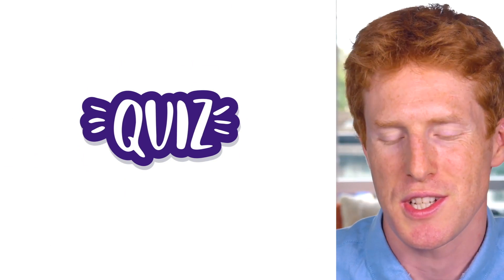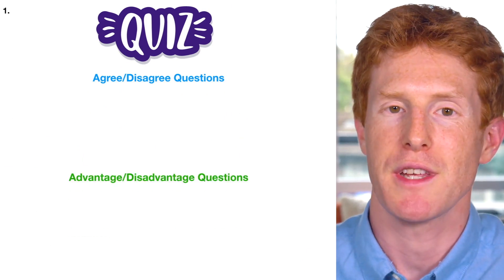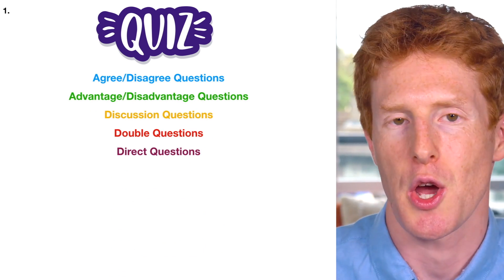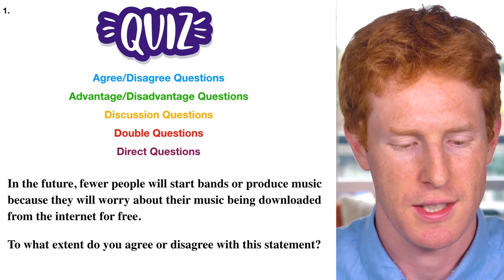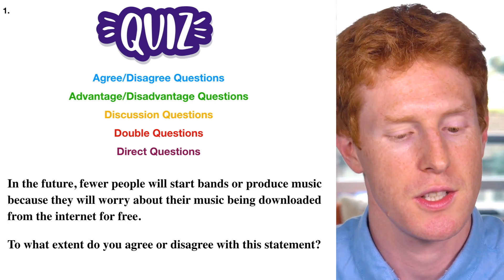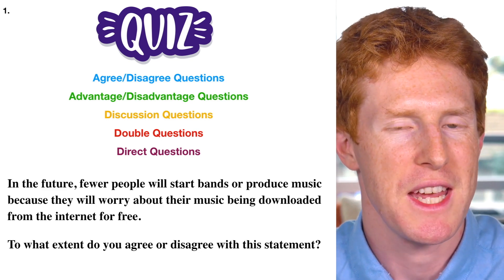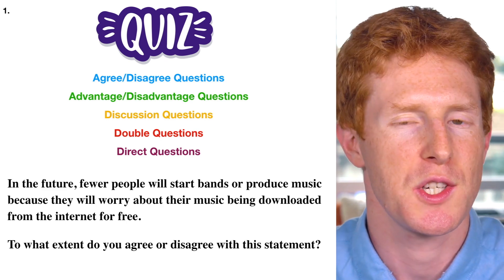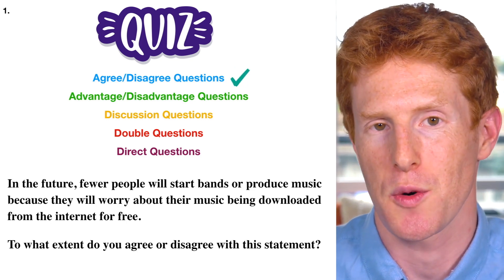Now we're going to do a quick quiz to see if you can identify the different question types. Remember we have agree-disagree, advantage-disadvantage, discussion, double, and direct questions. The clue is always going to be in the task — in the second part. For question one, it says 'to what extent do you agree or disagree with this statement?' — so we know we need to write an agree-disagree essay.